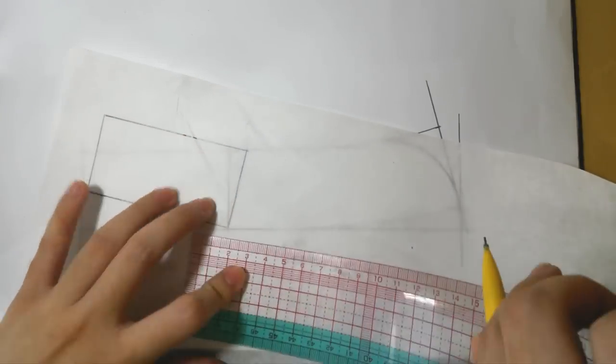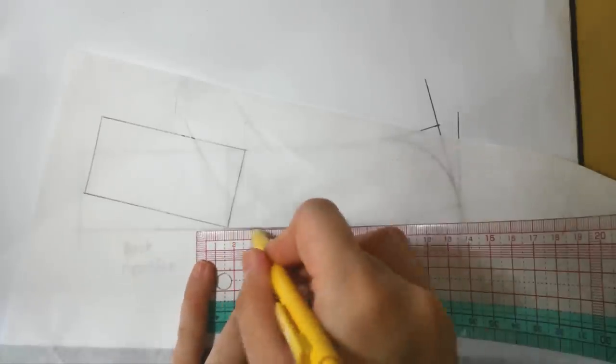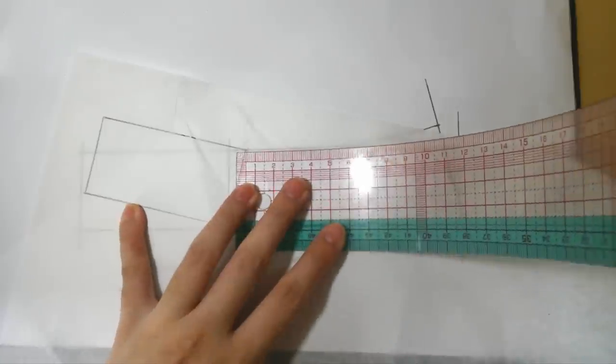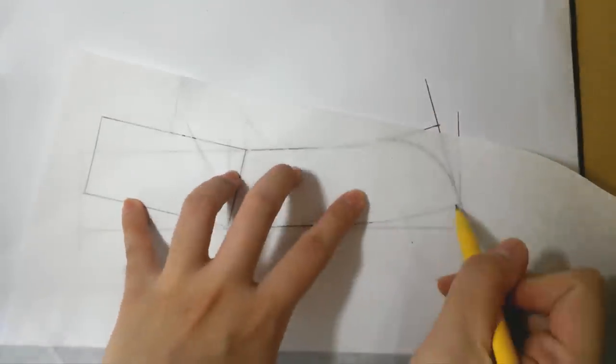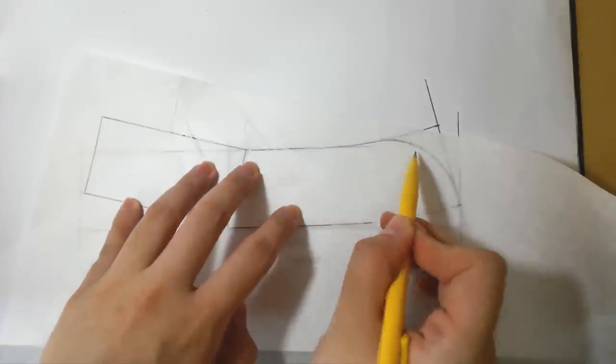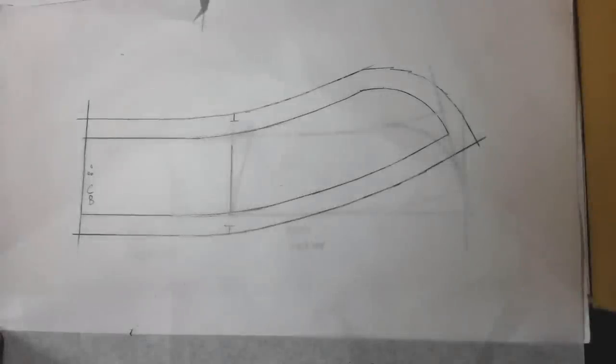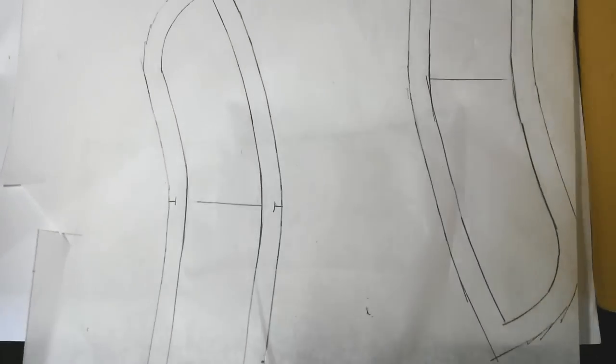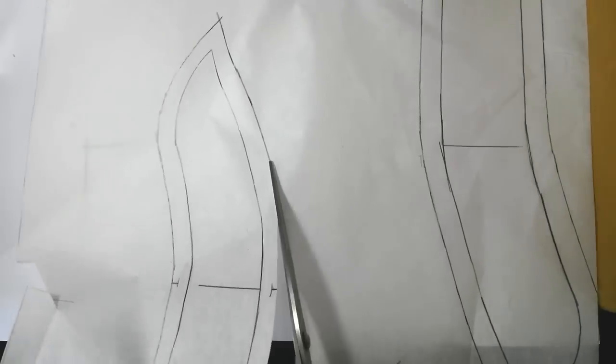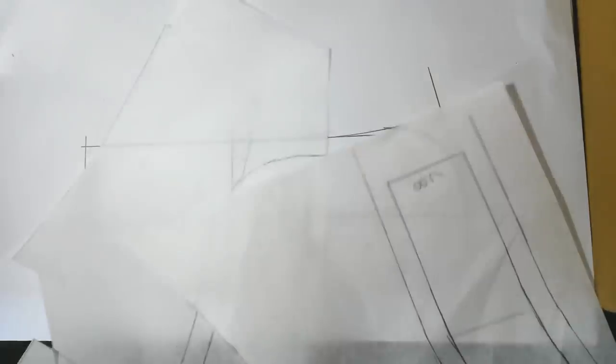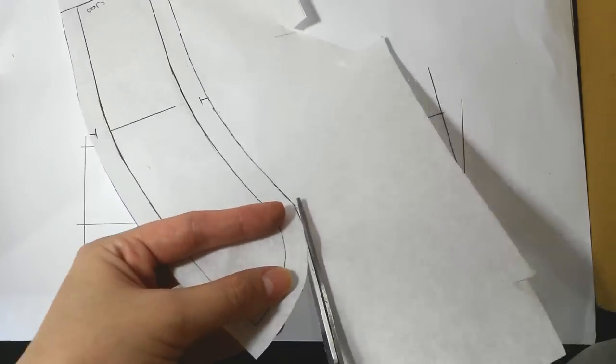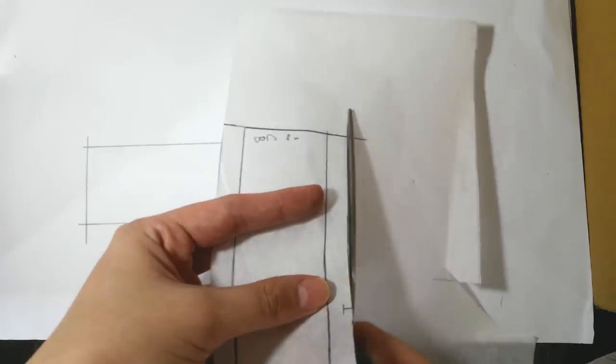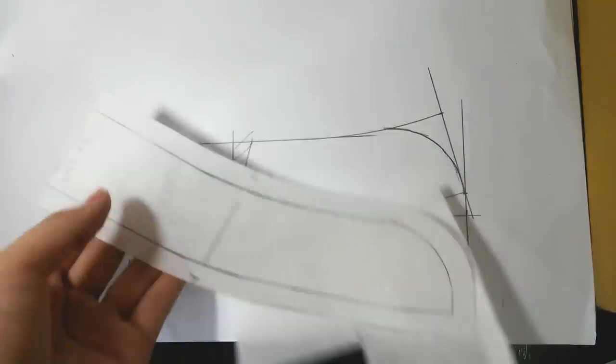Then omit the 1cm, continue with the front. Add seam allowances as you desire. If your garment opening will be at front, you might want to unfold the center back like this. Don't forget to give a notch so it will be easier later when you sew the collar to the bodice. Cut the pattern and now we are ready to cut the fabric.